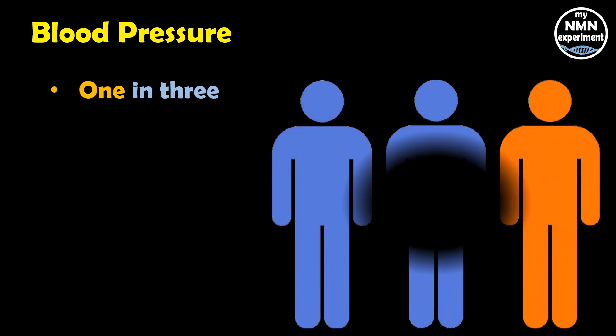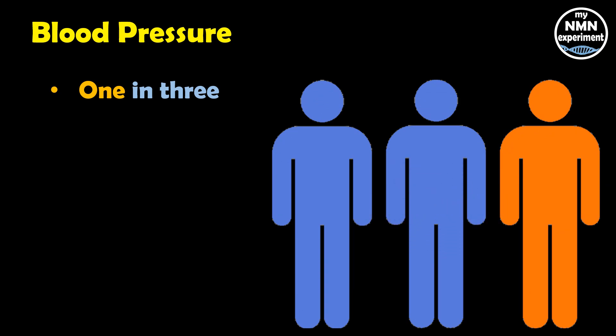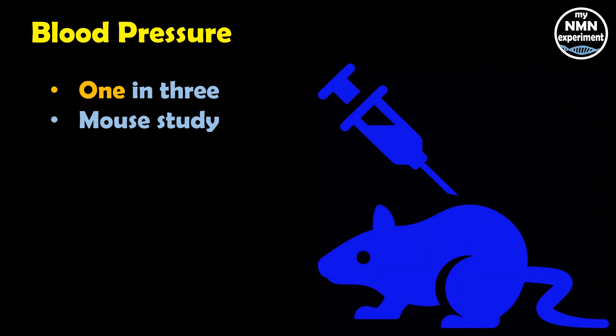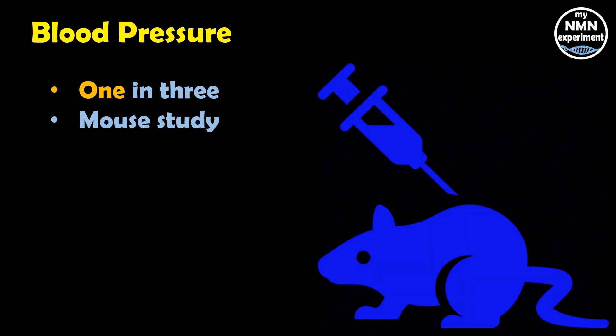Quercetin may also help reduce blood pressure. High blood pressure affects one in three American adults and raises the risk of heart disease, which is the leading cause of death in the United States. When mice with high blood pressure were given quercetin daily for five weeks, their systolic and diastolic blood pressure values decreased by an average of 18 and 23 respectively.